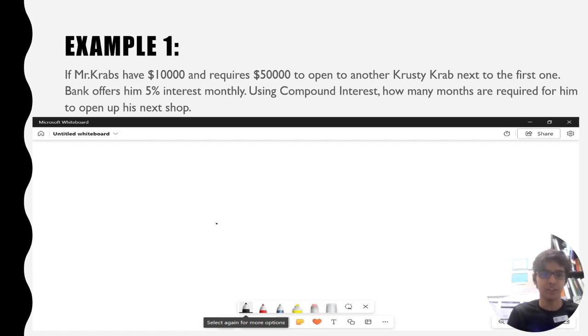Example 1: If Mr. Krabs has $10,000 and requires $50,000 to open another Krusty Krab next to the first one, the bank offers him 5% interest monthly. Using compound interest, how many months are required for him to open up his next shop?